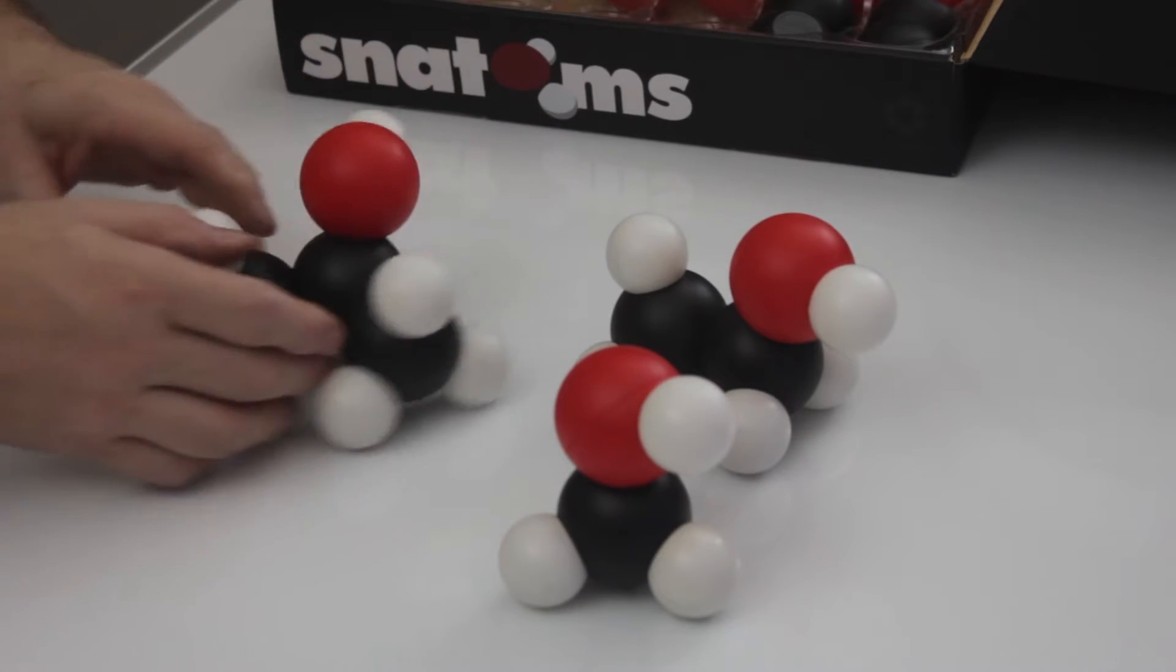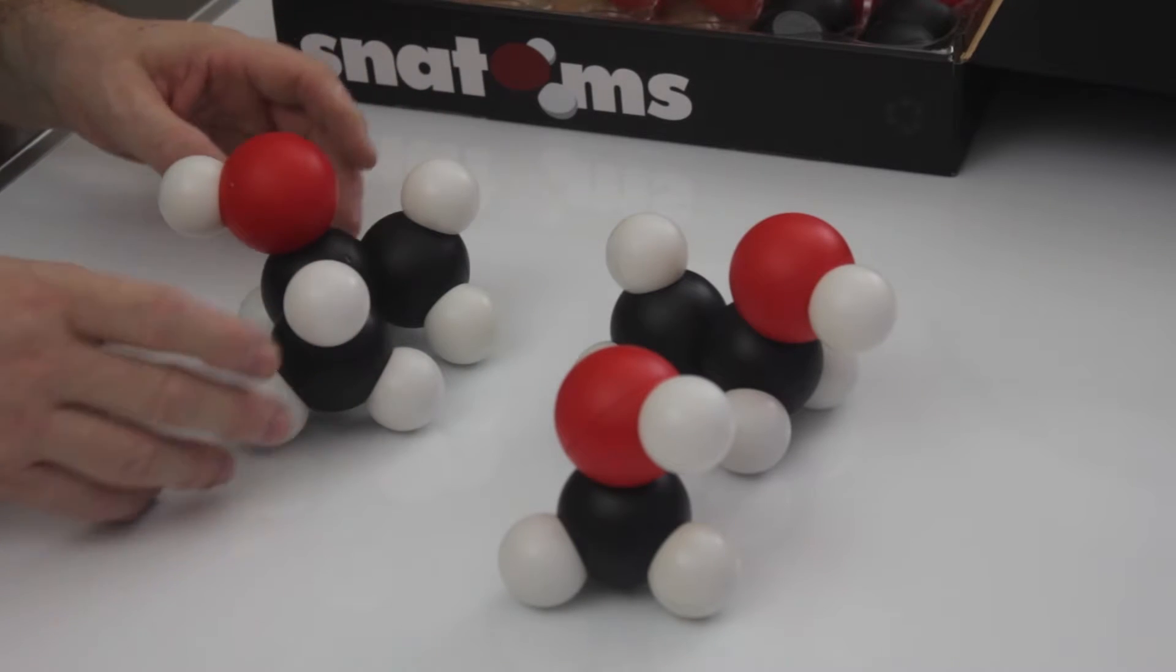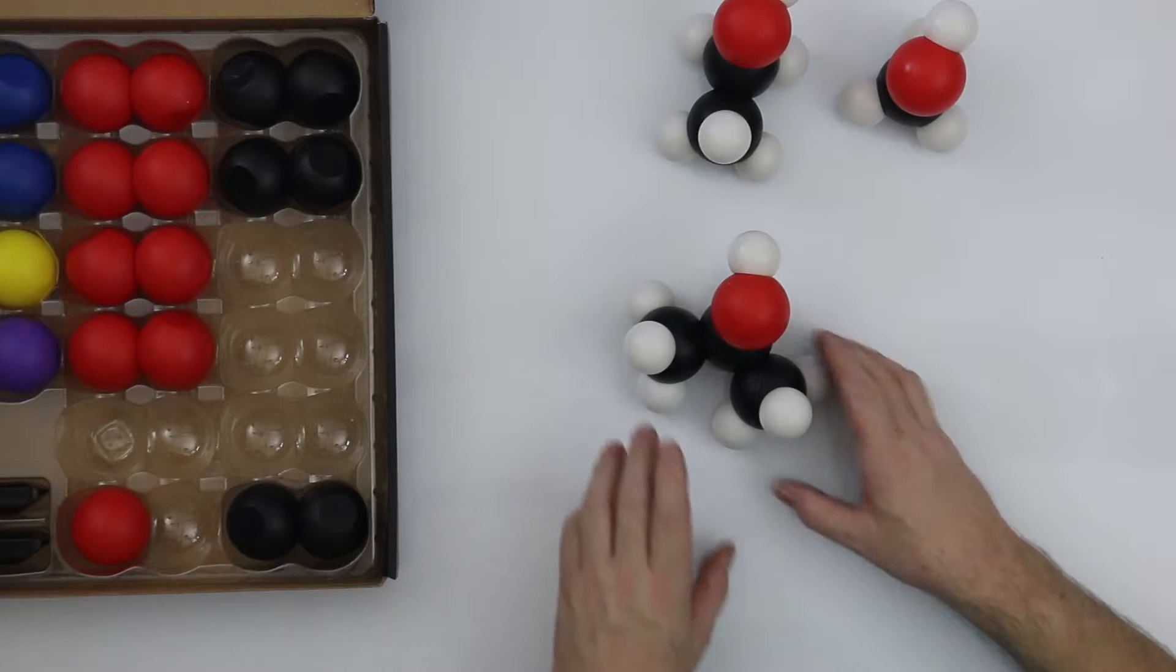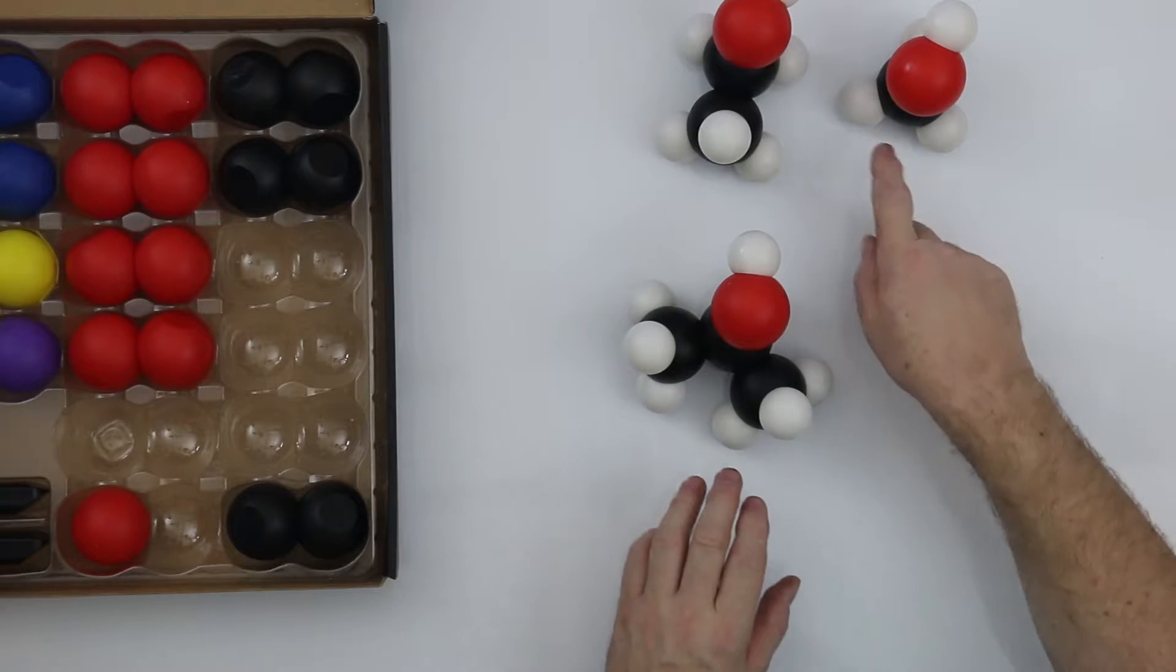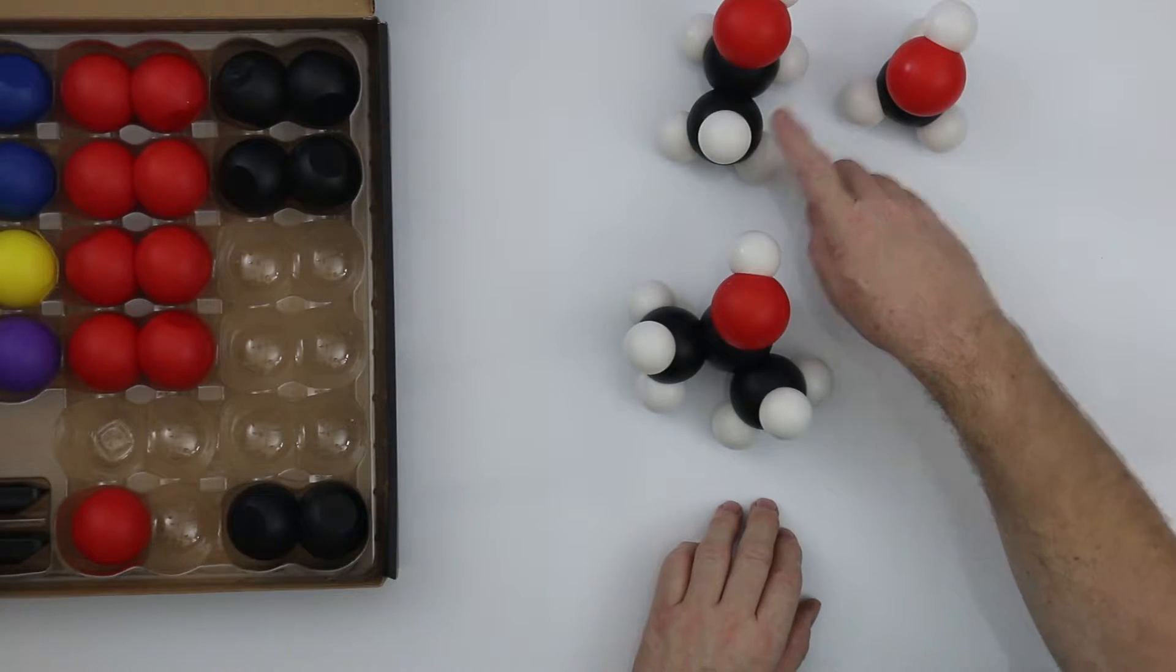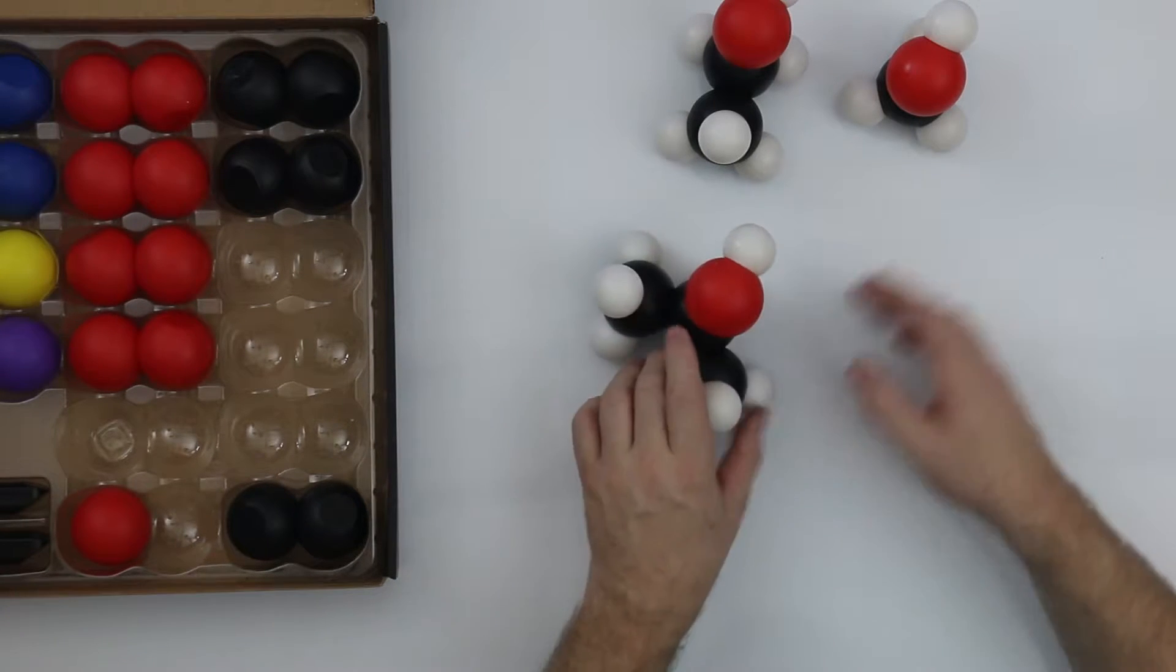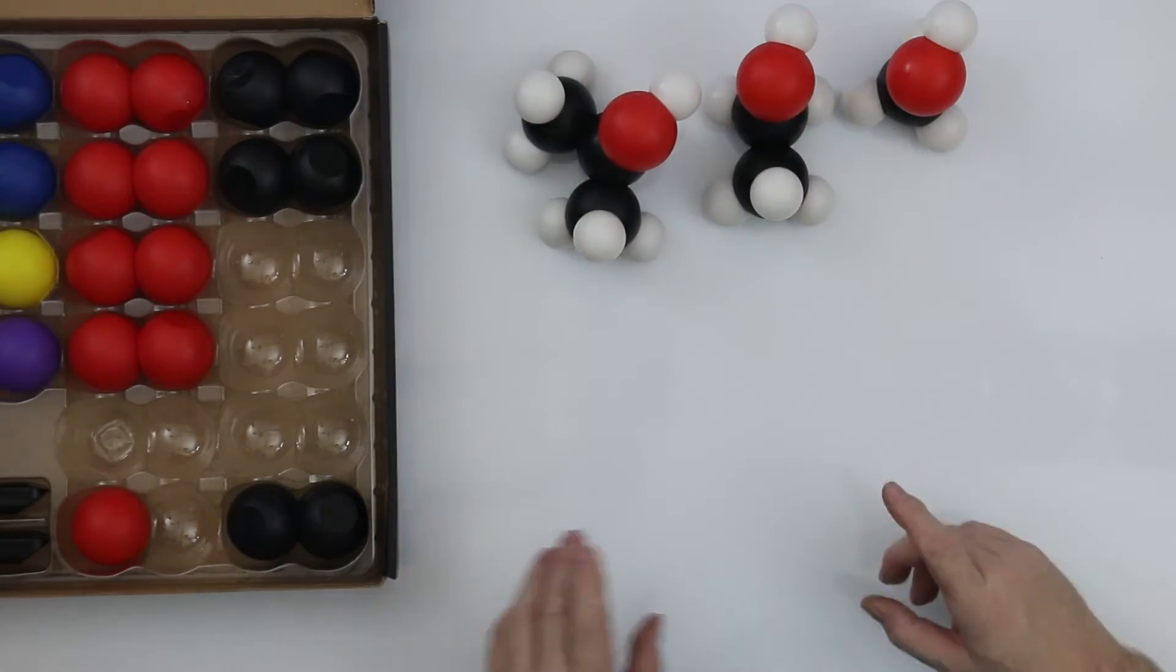And this will have different chemical properties. So this is the family of the ethanol. The alcohol: methanol, ethanol, and propanol. Let's take these but see what else we can do with them.